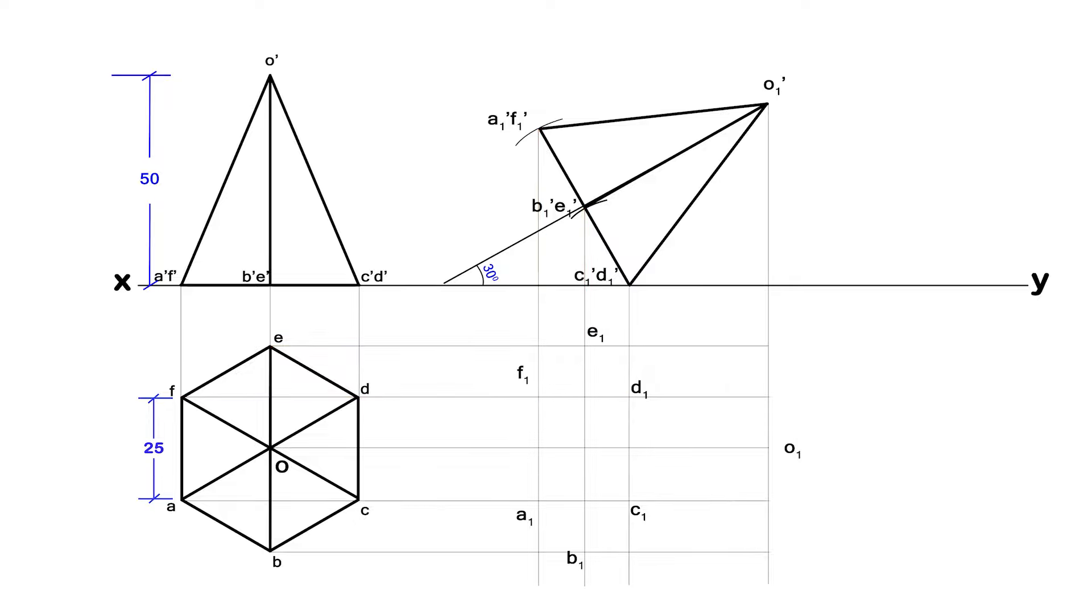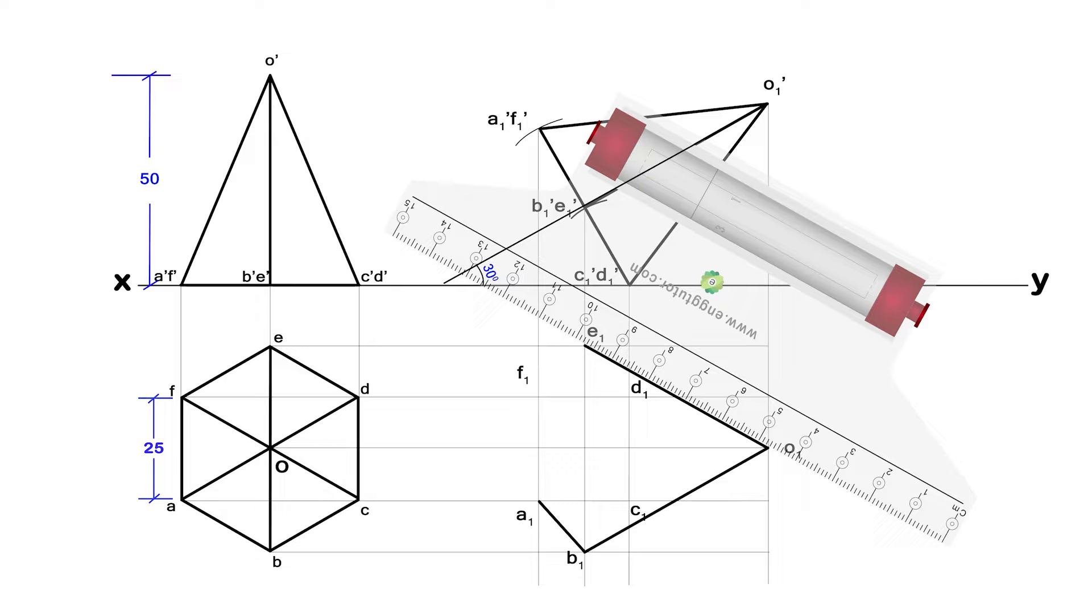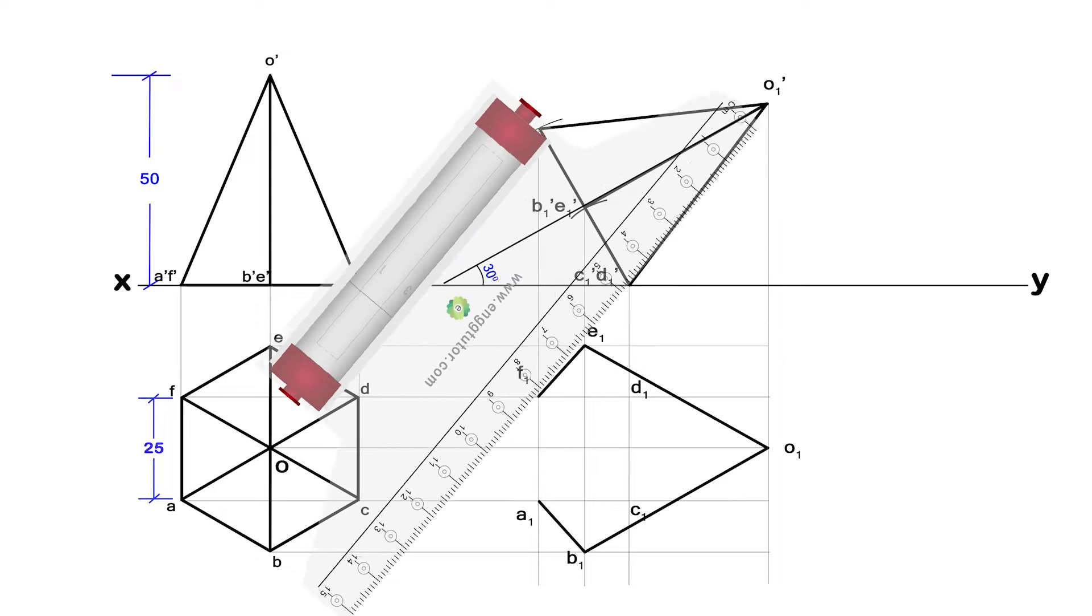To complete the final top view, firstly join the outer edges that is A1 to B1, B1 to O1, O1 to E1, E1 to F1, and F1 to A1.